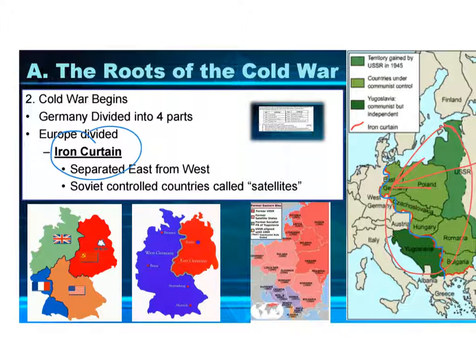Europe was being divided: the communist side versus the pro-democracy, American side. You can take a step farther and see what they did in Germany — dividing it into four different sectors: British, French, American, and Soviet. We wanted to denazify Germany and figure out what to do with it. They were too powerful, and we didn't want them to get any more powerful.